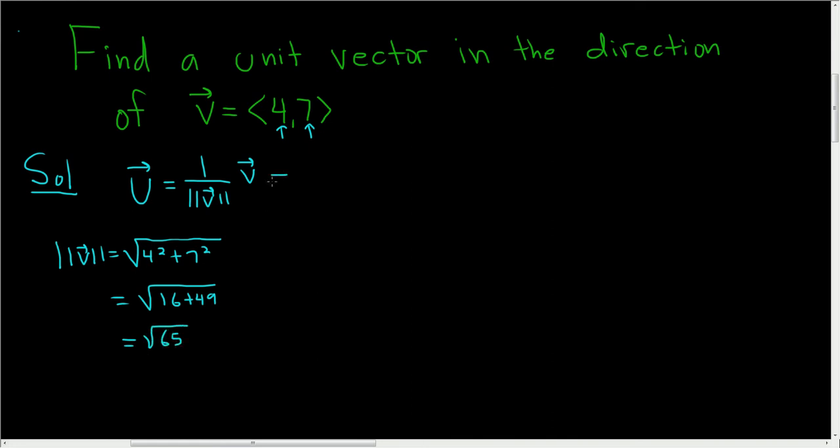Now we just go back to our formula. So we get 1 over the square root of 65, that's being multiplied by <4,7>, the vector with entries 4 and 7.